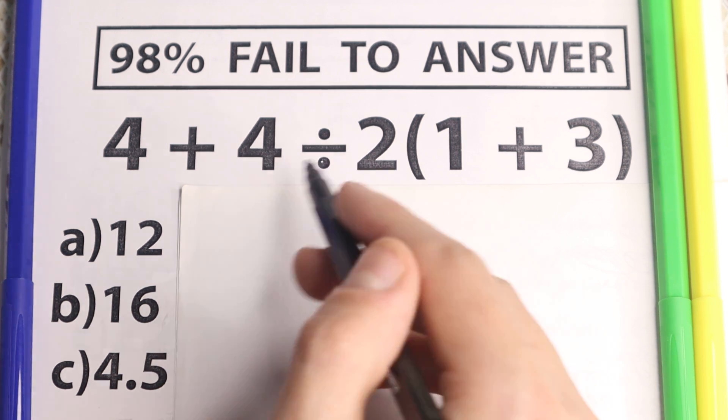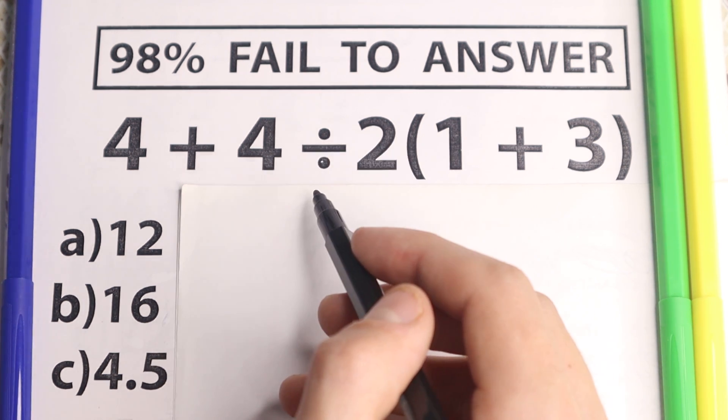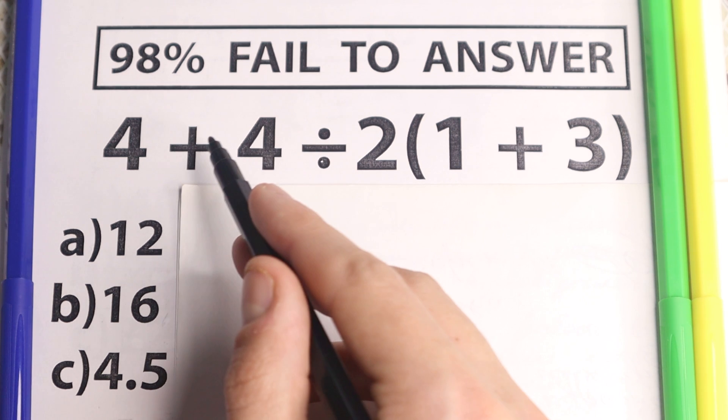So here is the main question. Do we do addition first, then division and multiplication? Do we do division first, then addition, then multiplication?